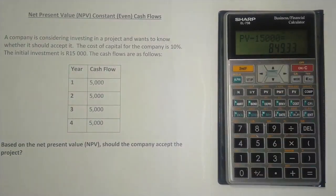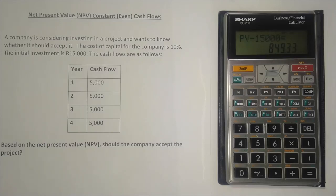Since the result is positive, the net present value is positive and we accept the project. The answer is the same: 849 rand 33 cents. You can choose which method you prefer — the first CFi method or the annuity PV method. You can also use the non-constant cash flows approach and get the same answer. Check out our other lessons using the same financial calculator. Till next time, cheers.